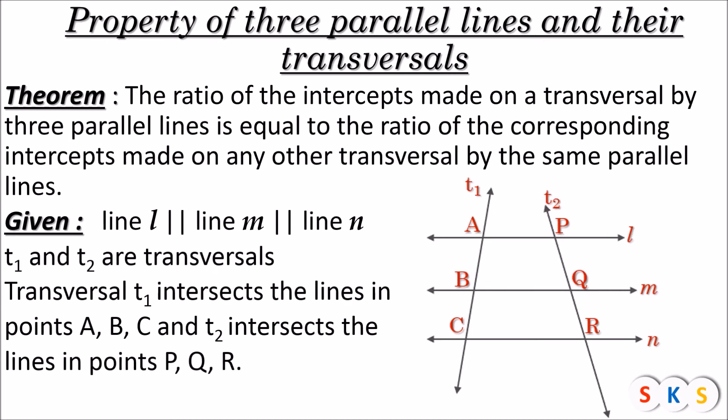What is given here: line L parallel to line M parallel to line N. Transversal T1 intersects lines L, M, and N at points A, B, and C respectively, and transversal T2 intersects lines L, M, and N at points P, Q, and R respectively.